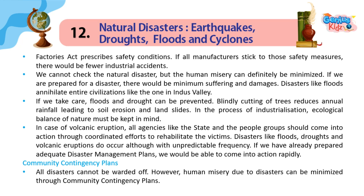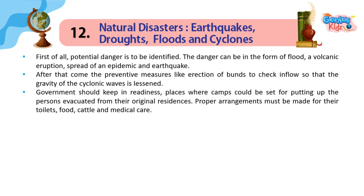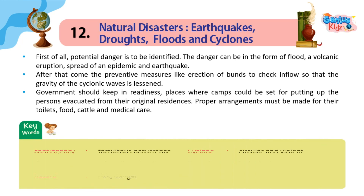Community contingency plans: All disasters cannot be warded off. However, human misery due to disasters can be minimized through community contingency plans. First of all, potential danger is to be identified — the danger can be in the form of flood, volcanic eruption, spread of an epidemic, or earthquake. After that come the preventive measures, like erection of embankments to check inflow so that the gravity of cyclonic waves is lessened. Government should keep in readiness places where camps could be set up for persons evacuated from their original residences. Proper arrangements must be made for their toilets, food, cattle and medical care. Key terms: contingency (fortuitous occurrence), cyclone (circular and violent), disaster (adversity/calamity), drought (lack of rain), hazard (risk/danger).